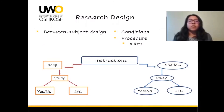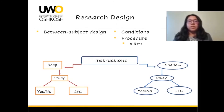For the research design, we used a between-subject design. You can see on the diagram the four different conditions and the procedure the participants went through. When the participants came in, they were randomly assigned to a condition, which determined the depth of encoding and the test they would take, and after the test they were debriefed.